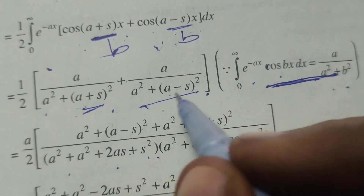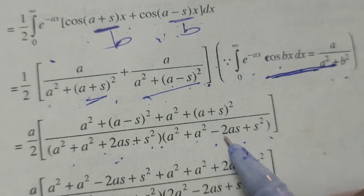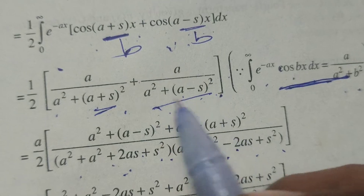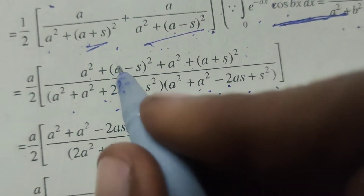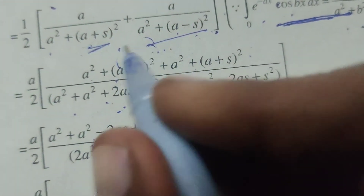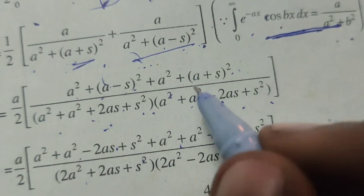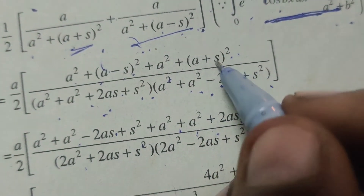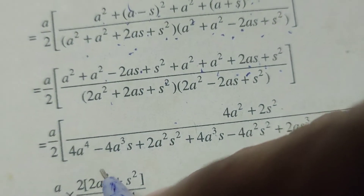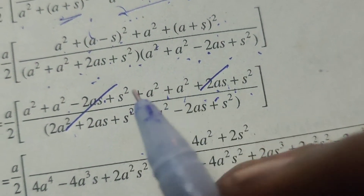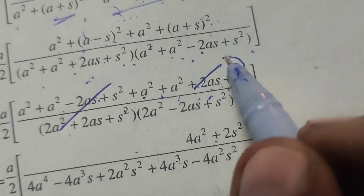Taking LCM of the two terms: the numerator becomes a by 2 into a square plus a minus s whole square plus a square plus a plus s whole square. Expanding using the formulae: a minus b whole square gives a square minus 2as plus s square, and a plus b whole square gives a square plus 2as plus s square. In the numerator, the minus 2as and plus 2as cancel.